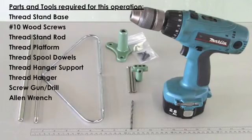For this operation, you will require the threadstand base, three number 10 wood screws, the threadstand rod, the thread platform, three thread spool dowels, the thread hanger support, the thread hanger, a screw gun, a drill with 3/16 inch drill bit, and an Allen wrench.